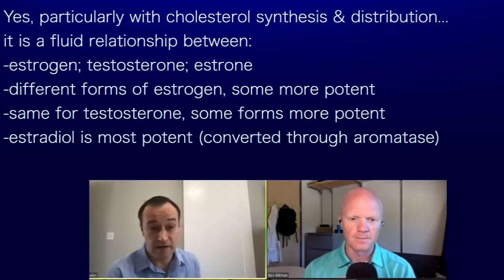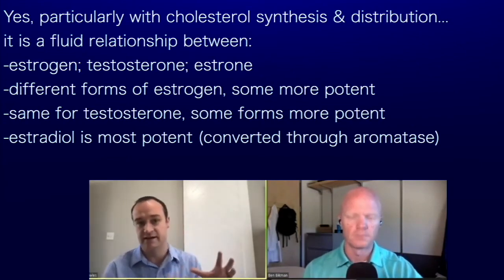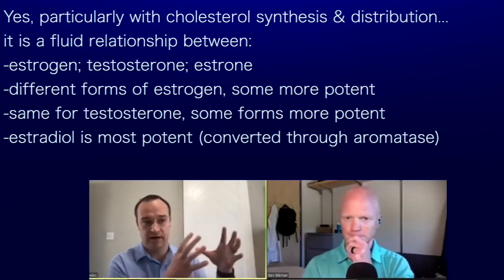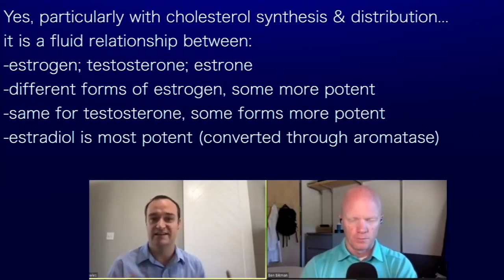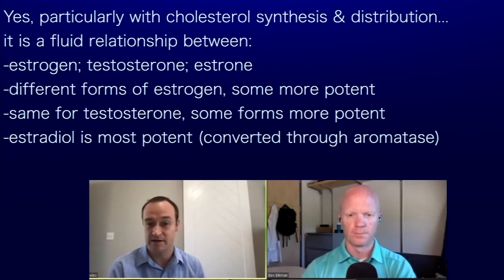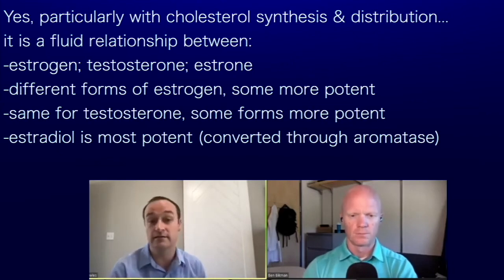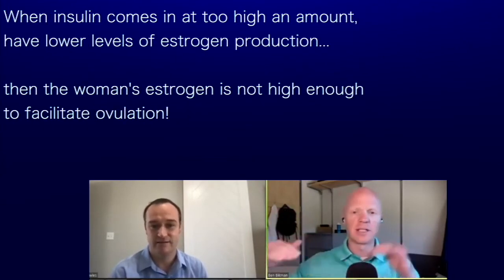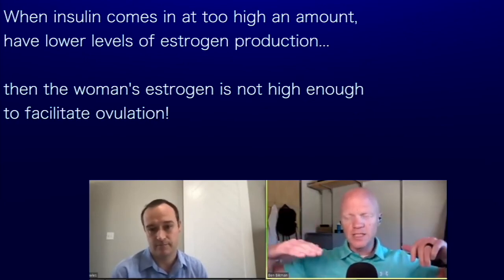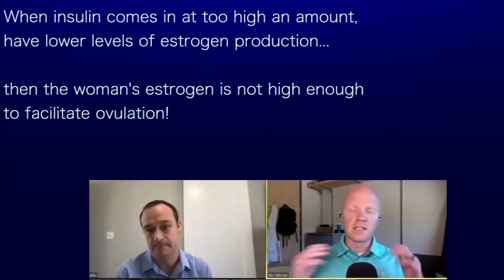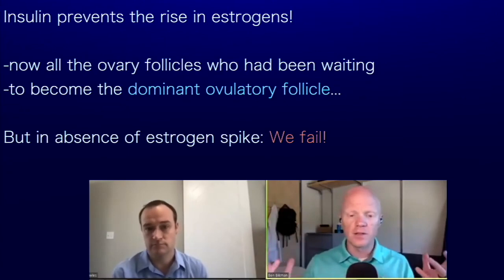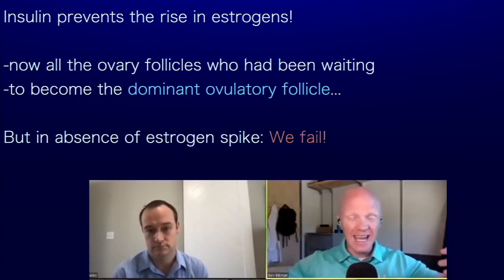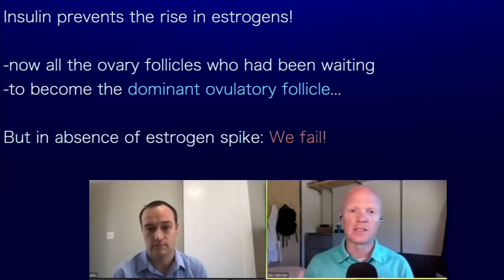Too much insulin directly impacts that enzyme. With cholesterol synthesis and distribution, there is a fluid relationship between estrogen, testosterone, estrone, and estriol — different forms of estrogen with different potencies. Estradiol is the most potent form and is created directly from testosterone through aromatase. When insulin comes in, we have lower levels of estrogen production, and the woman doesn't have enough estrogens to facilitate ovulation. This prevents the estrogen spike needed for one follicle to become the dominant ovulatory follicle.